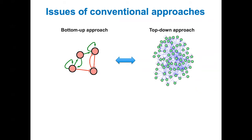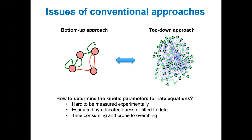A popular way to model a circuit is to use rate equations. However, most of the required kinetic parameters are not directly measurable, especially in vivo. Thus, one has to either make educated guesses or fit the parameters against data, such as gene expression. This becomes an issue for large circuits with a large number of parameters, making the approach time-consuming and prone to overfitting.